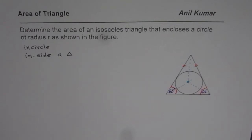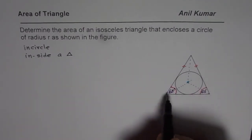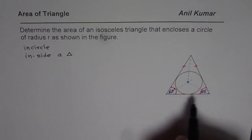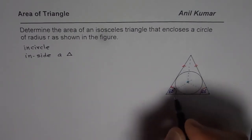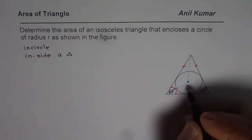In general, if we have a circle inside a triangle, the triangle could be scalene. But here we are considering special cases. In this video, I'm taking up an isosceles triangle. In the next video, I'll take up an equilateral triangle. So let us say this is an isosceles triangle where the base angles are the same — 65 degrees and 65 degrees as shown — and we are taking a general radius R.